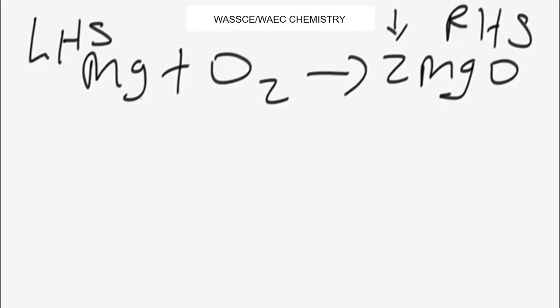We have two atoms of magnesium on the right and one atom of magnesium on the left, so to balance the equation we need to add two atoms of magnesium on the left as well. Now we have two atoms of magnesium on each side — magnesium is balanced. For oxygen we also have two atoms on each side, so the equation is now balanced.